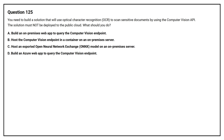Question number 125. You need to build a solution that will use optical character recognition (OCR) to scan sensitive documents by using the Computer Vision API. The solution must not be deployed to the public cloud. What should you do? Option A: Build an on-premises web app to query the Computer Vision endpoint. Option B: Host the Computer Vision endpoint in a container on an on-premises server. Option C: Host an exported Open Neural Network Exchange model on an on-premises server. Option D: Build an Azure web app to query the Computer Vision endpoint. The correct answer is Option B: Host the Computer Vision endpoint in a container on an on-premises server.